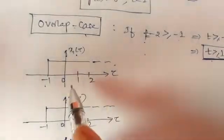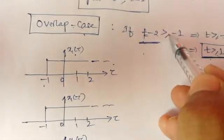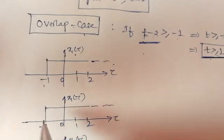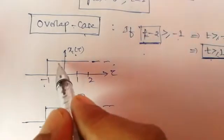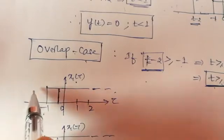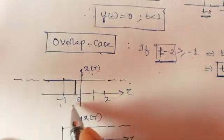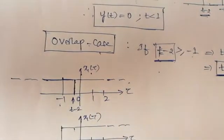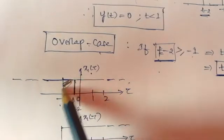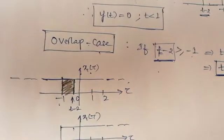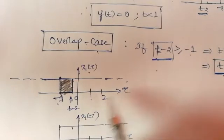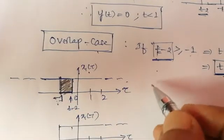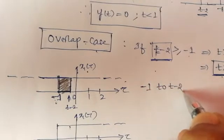Let us see how it happens. I sketch the first signal as it is. If t−2 ≥ −1, I can shift the second signal and place it anywhere over the first signal. Observe the signal: from where to where does it overlap? From t = −1 to t−2 — this amount of signal gets overlap. So the limits for this first illustration are from −1 to t−2.